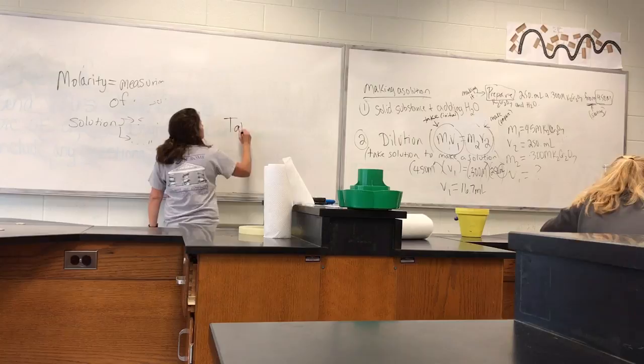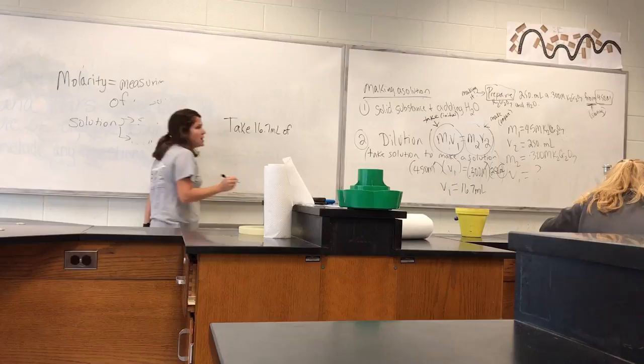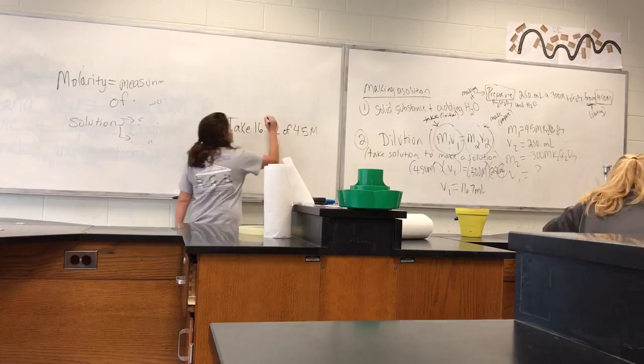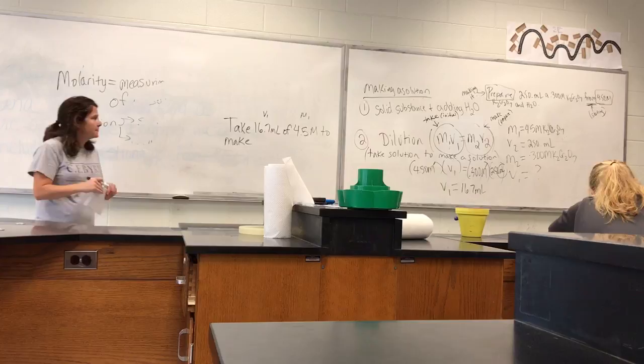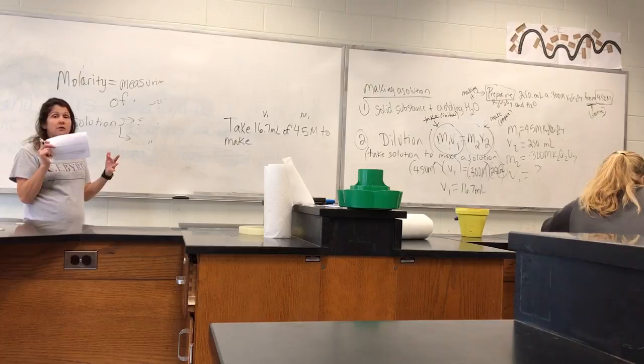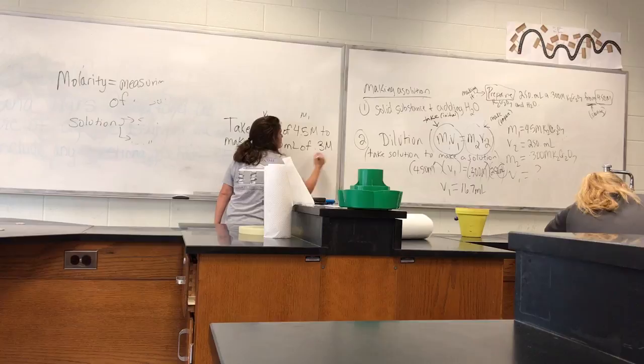What was our M1 and our V1? Well, our V1 was 16.7 milliliters, right? So we're taking 16.7 milliliters of what? 4.5 molar. So we're taking our V1 of our M1. Okay, you can answer it. To make, well, what are we making? We're making our M2 and our V2. So we're making what? We're making 250 milliliters of 0.3 molar solution.